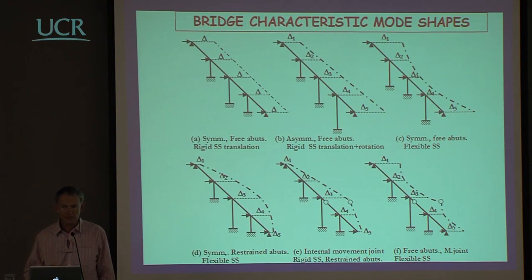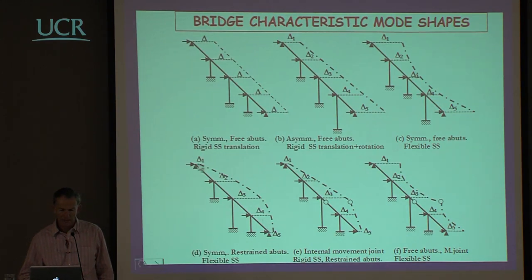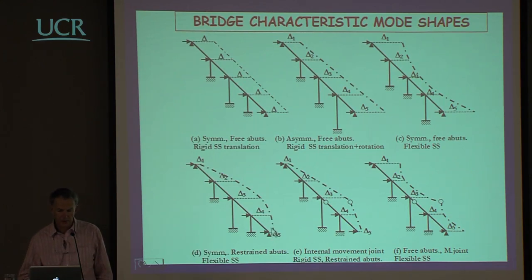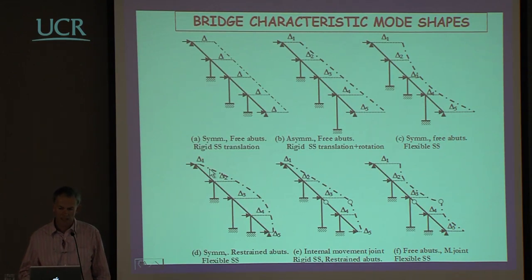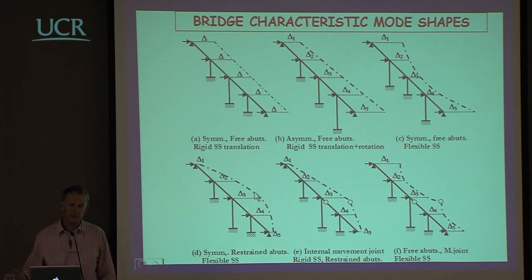Something worth mentioning now: if we have the common situation of a bridge restrained at the abutments but with flexibility transversely and longitudinally, then the longitudinal response will always govern — and the longitudinal response is easy to do for design. So we can effectively ignore the transverse response, which is more difficult.